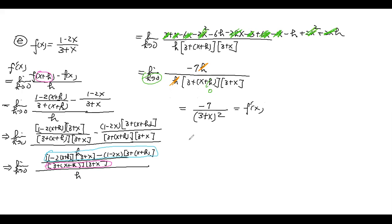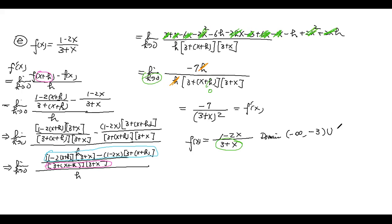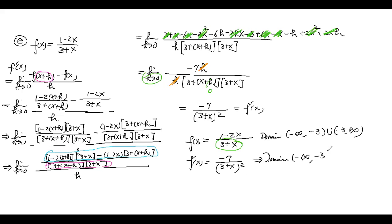We need to check the domain. f(x) = (1−2x)/(3+x) is a rational function, so the denominator cannot be zero. The domain is all real numbers except x = −3: (−∞, −3) ∪ (−3, ∞). For f′(x) = −7/(3+x)², x = −3 is also excluded, so the domain is the same: (−∞, −3) ∪ (−3, ∞).